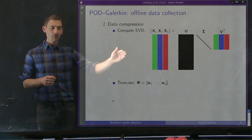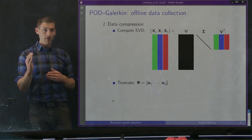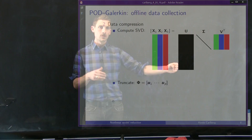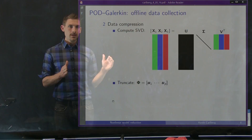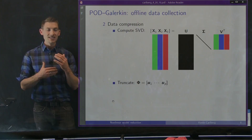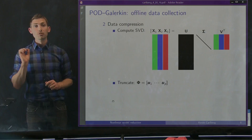POD Galerkin then takes the snapshot matrix and computes the singular value decomposition. The left singular vectors can be interpreted as the principal components or principal modes of our snapshot matrix — the columns of U from left to right contain the dominant modes. We merely truncate that basis, preserving the P most important left singular vectors where P is chosen by looking at the decay of the singular values. This POD basis φ encapsulates the most important information of our state as observed over our training simulations. This is the offline stage where we've characterized the dynamics of our nonlinear dynamical system.